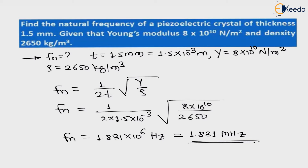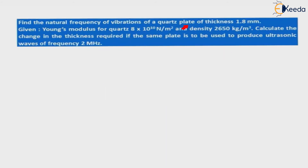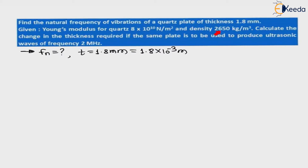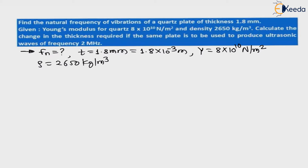Now let us understand the second question. Find the natural frequency of vibration of a quartz plate of thickness 1.8 mm. We have to find fn. Thickness t = 1.8 mm = 1.8 × 10⁻³ meter. Young's modulus Y = 8 × 10¹⁰ N/m² and density ρ = 2650 kg/m³.